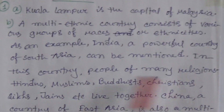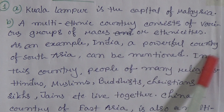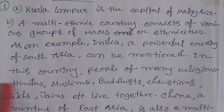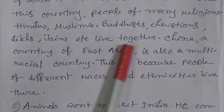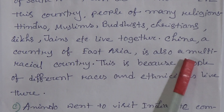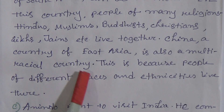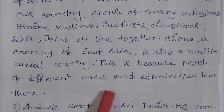As an example, India, a powerful country of South Asia, can be mentioned. In this country, people of many religions — Hindus, Muslims, Buddhists, Christians, Sikhs, Jains, etc. — live together. China, a country of East Asia, is also a multi-racial country, because people of different races and ethnicities live there.